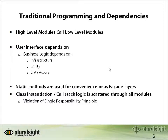Most traditional programming works such that dependencies naturally accrue within code because higher-level modules tend to call and instantiate lower-level modules. A user interface might new up a business logic class like a customer or order class, which in turn might new up a data access component, logger, or other infrastructure class. The UI depends on business logic; business logic depends on infrastructure and data access classes. Furthermore, it's often the case that a facade layer is implemented using static methods to provide a simpler API for business-level methods.